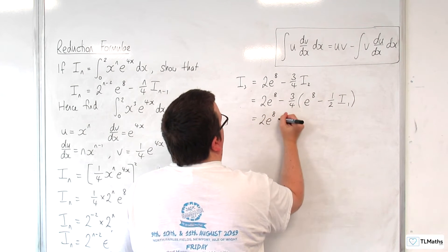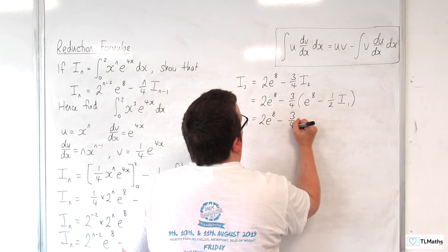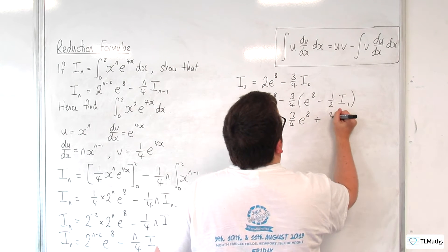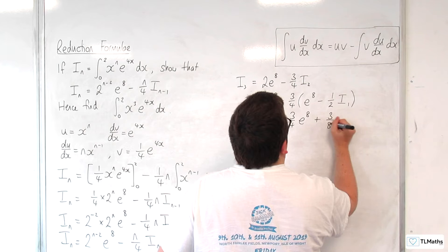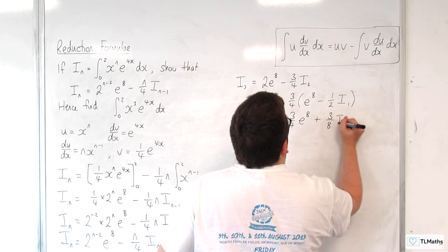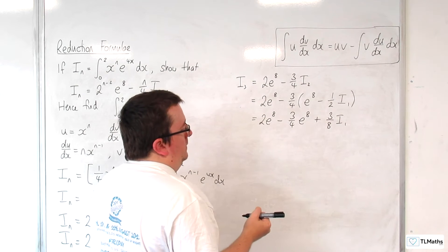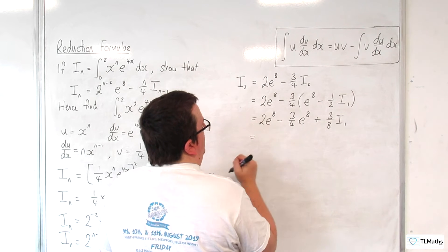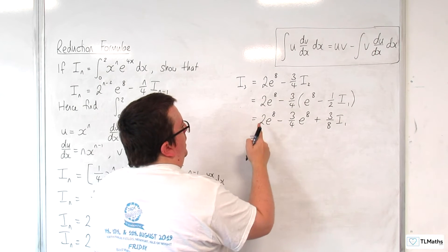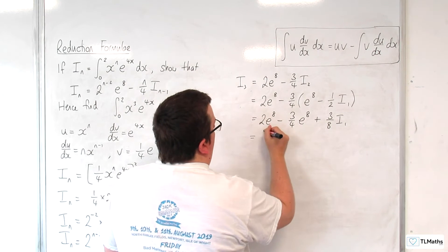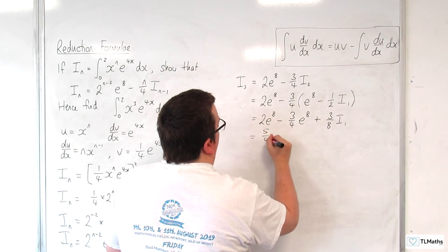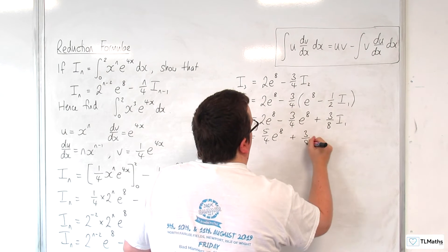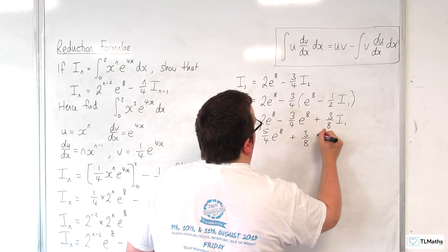Simplifying: 2 e to the 8 take away 3 quarters times e to the 8, plus 3 eighths of I1. We can simplify the e to the 8 terms already: 2 take away 3 quarters is 5 quarters, so we have 5 quarters e to the 8 plus 3 eighths of I1.